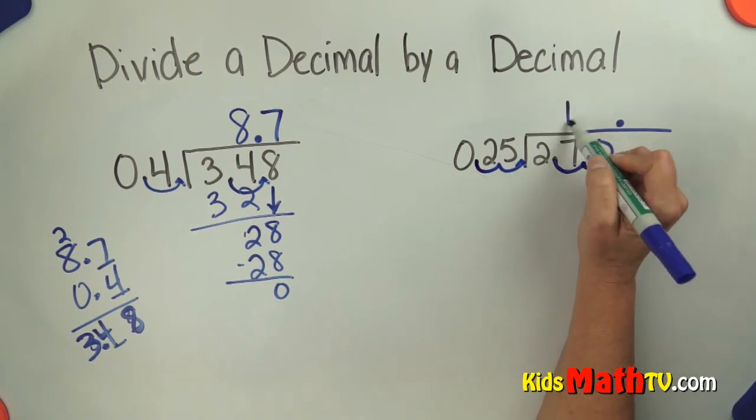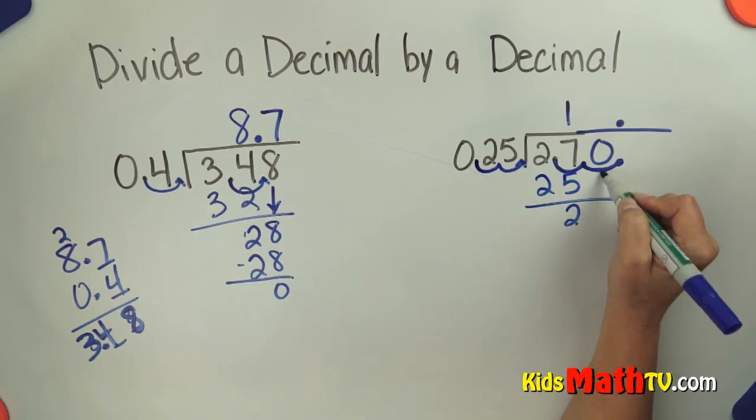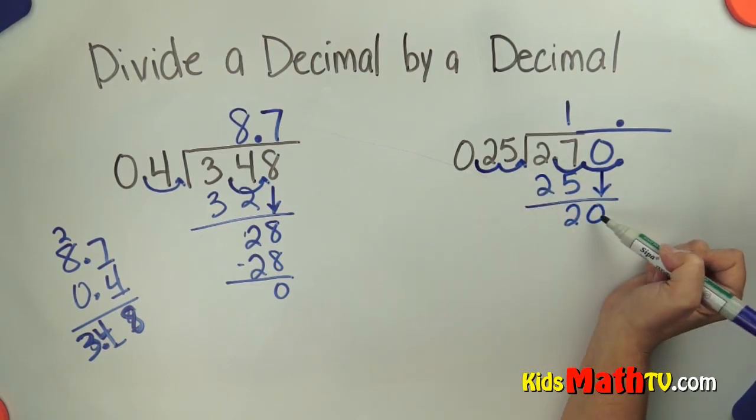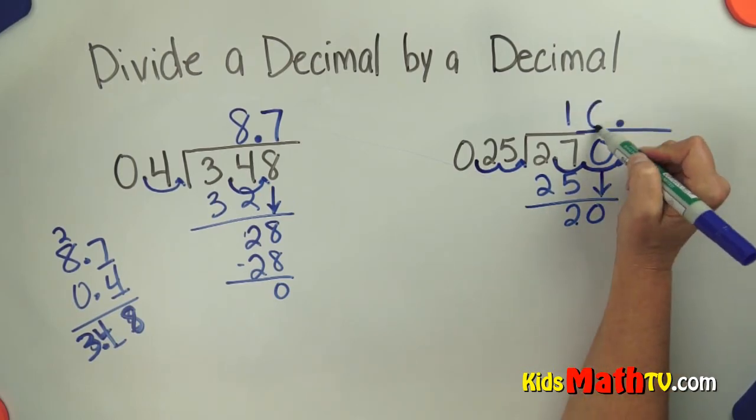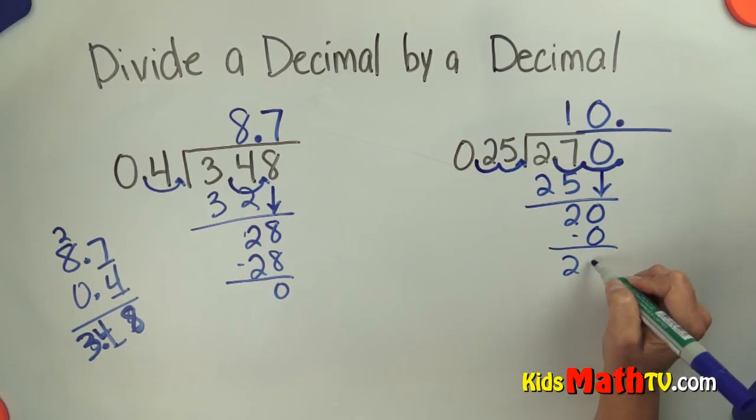How many 25's in 27? 1. 25. I can subtract and bring down a 0. How many 25's in 20? Well, there are none. That's 0. Subtract is 20.